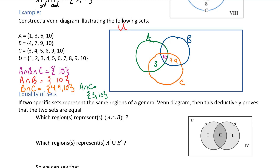Now I underline elements already placed — 3, 4, 9, and 10 — and determine where the rest go. In set A I have 1, 3, 6, and 10; since 3 and 10 are taken, 1 and 6 go in set A only. In set B I have 4, 7, 9, and 10; since 4, 9, and 10 are placed, 7 goes in the B circle only.